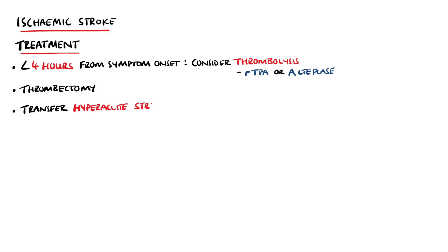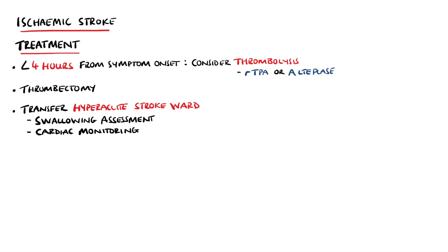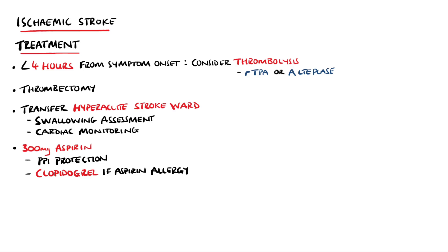The patient will then be moved to an acute stroke unit, where they will require an assessment of their swallowing and will be placed on cardiac monitoring to look for an underlying cause of stroke, such as atrial fibrillation. Typically, aspirin 300mg will be started for roughly two weeks alongside a proton pump inhibitor, especially if the patient has a history of dyspepsia, or clopidogrel 300mg may be started if there is an allergy to aspirin. Patients with atrial fibrillation or another indication for anticoagulation will usually have their anticoagulation held for the first two weeks and restarted as part of secondary prevention, though trials are now looking at the benefits of starting anticoagulation earlier.